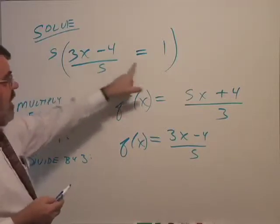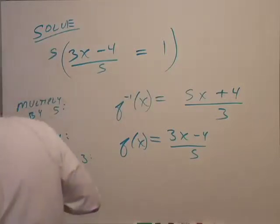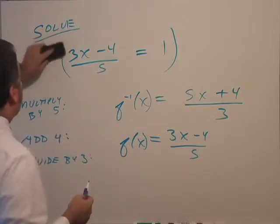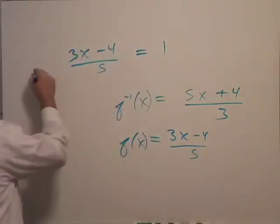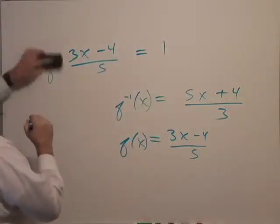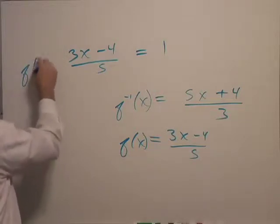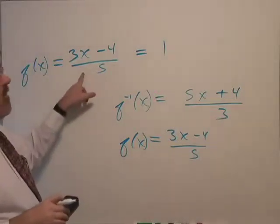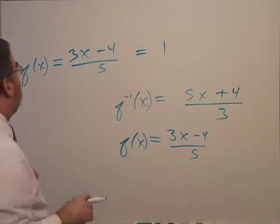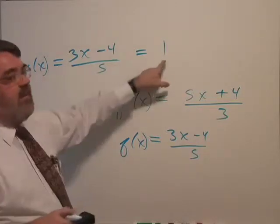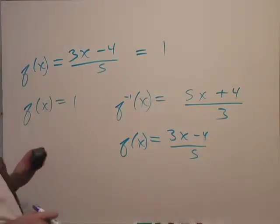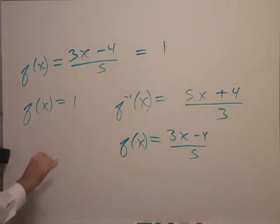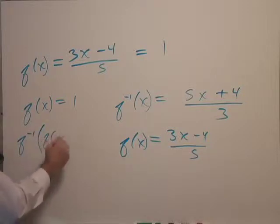Now when you think about this, how is this problem written? This is written as f of x, which equals my function, equals 1. So f of x equals 1. Let me write that separately. To solve this problem, if I know the inverse function, I'm going to apply it to both sides.